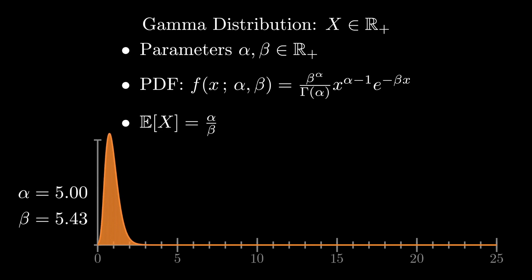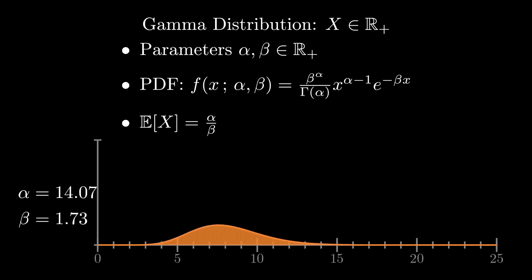The gamma distribution actually contains the exponential distribution as a special case, but it allows the mode to be somewhere other than zero.